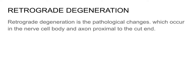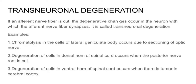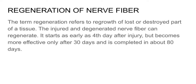Retrograde degeneration is a pathological change that occurs in the nerve cell body and the portion proximal to the cut end. Transneuronal degeneration: if an afferent nerve fiber is cut, the degenerative change occurs in the neuron with which the afferent nerve fiber synapses — this is called transneuronal degeneration.